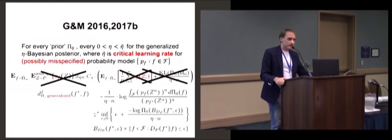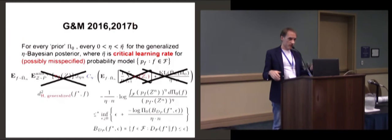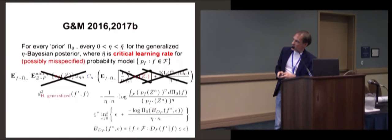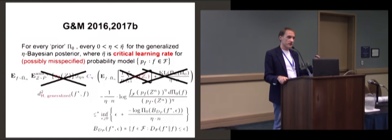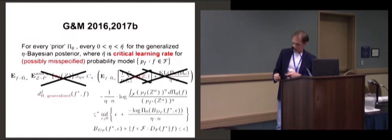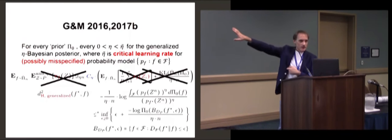What happens if your model is wrong? For eta smaller than one, things often won't work anymore. But often there's still a critical eta-bar, and if you take eta smaller than eta-bar, this thing still works — but now with a generalization of Hellinger distance where f* is the closest distribution to the truth in the model in terms of KL divergence. So you still get a convergence theorem, but now under misspecification. You do need the condition that this critical eta exists.